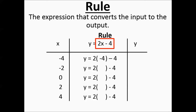We take the rule and substitute in the X for each different input. Plugging in −4: 2 times −4 minus 4 works out to −12. Plugging in −2 gives −8; plugging in 0 gives −4; plugging in 2 gives 0; and plugging in 4 gives 4. Notice the inputs are all two apart, and the outputs are all the same distance apart too.